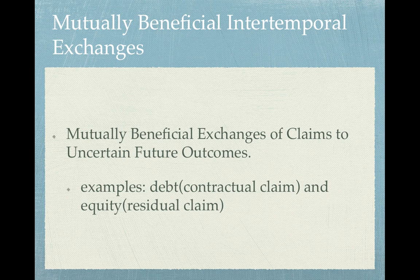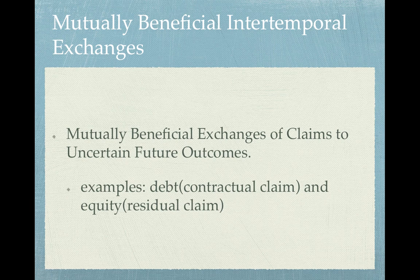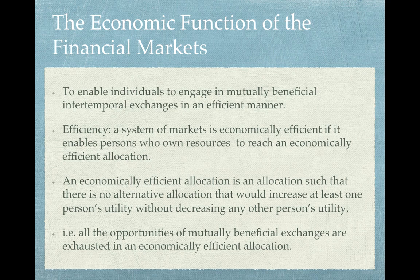Mutually beneficial exchanges also involve claims to uncertain future incomes. The same example of saving and borrowing applies, but borrowing could be done in a variety of ways — for example, you could issue a bond, which is a contractual claim, or raise money by issuing equity, which is a residual ownership claim. Both of these claims have one thing in common: they involve a certain amount of risk because future outcomes are uncertain. I urge you to take the first quiz before going on to the next video. Thank you.